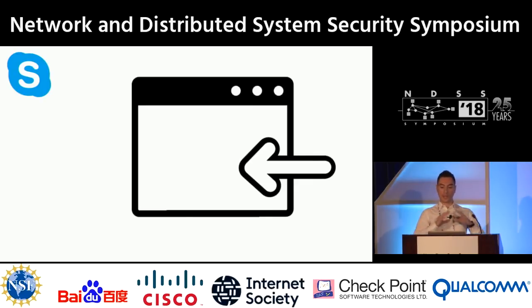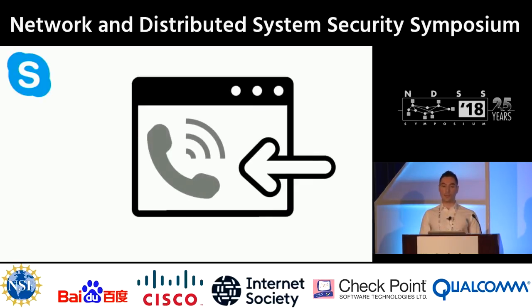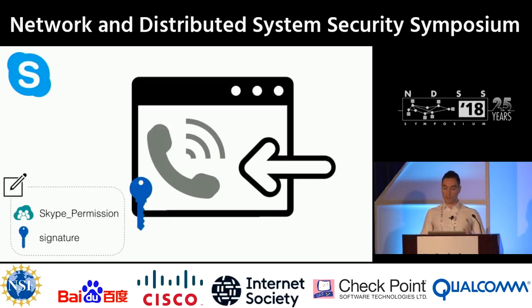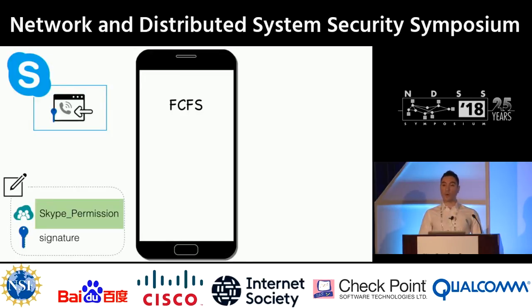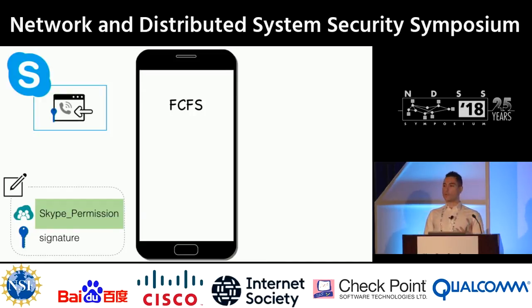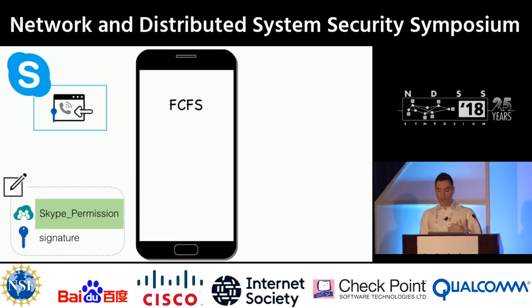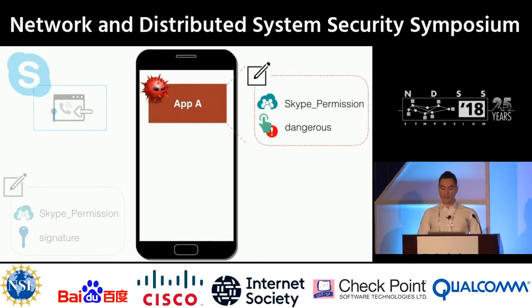Consider, for example, Skype, which has an activity that can be invoked to trigger its ability to place a phone call. This activity is protected by the Skype developer with a custom permission — call it the Skype permission — which has a protection level of signature, so it can only be invoked by Skype itself and by other Skype-owned applications. The problem is that custom permissions are identified based on their developer-declared name, which the system cannot really control. The system only enforces a first-come-first-serve policy to declare a custom permission. So another application — call it application A — can come inside the system, get installed before Skype, and declare the Skype permission first.